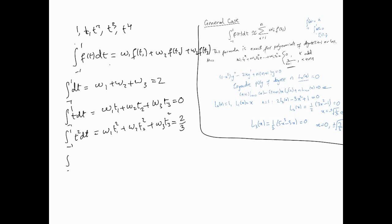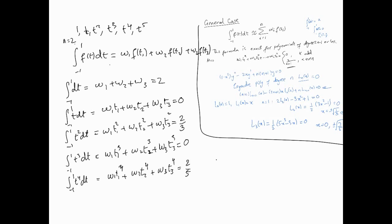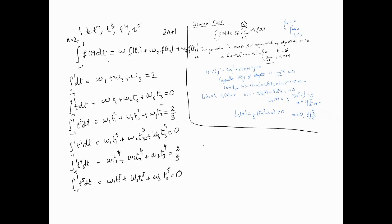Similarly to the first case in the previous video, this is for n equals 2. In general, 2n+1 is the order of the polynomial. When n was 1, it was third order — that's why we went up to the cubic. Now we go up to fifth order. One more equation needs to be calculated: the integral of t^4, which equals zero. So we're talking about six equations and six unknowns — the three weights and the three abscissae — and these equations are nonlinear, which is quite difficult to solve.